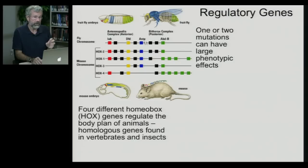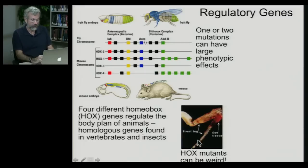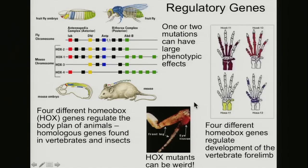What's extraordinary about these genes is that when you mess around with them — when you get a mutation on one of those Hox genes — the mutants can be bizarre. Here is the leg of a fruit fly that has a mutation in its Hox gene. It's its front leg, but it's growing an eye out of its knee. So these genes have huge, huge effects.